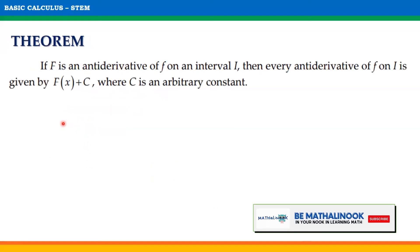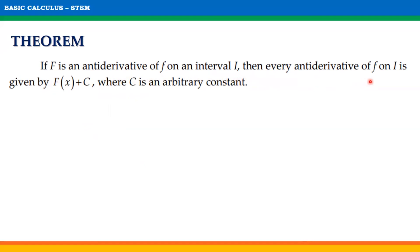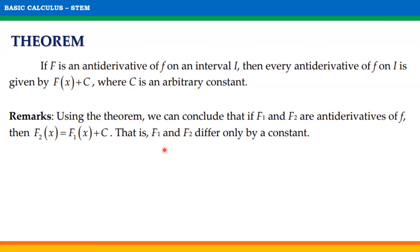Theorem: if capital F is an antiderivative of f on an interval i, then every antiderivative of f on i is given by capital F of x plus c, where c is an arbitrary constant. Using this theorem, we can conclude that if capital F₁ and capital F₂ are antiderivatives of f, then F₂(x) = F₁(x) + c. That is, capital F₁ and capital F₂ differ only by a constant.